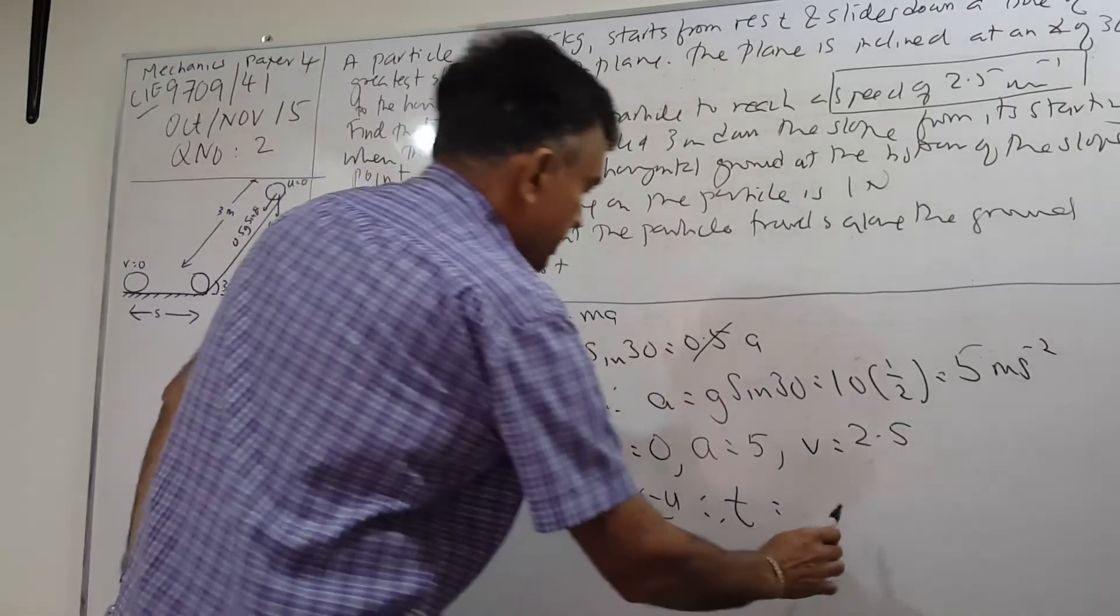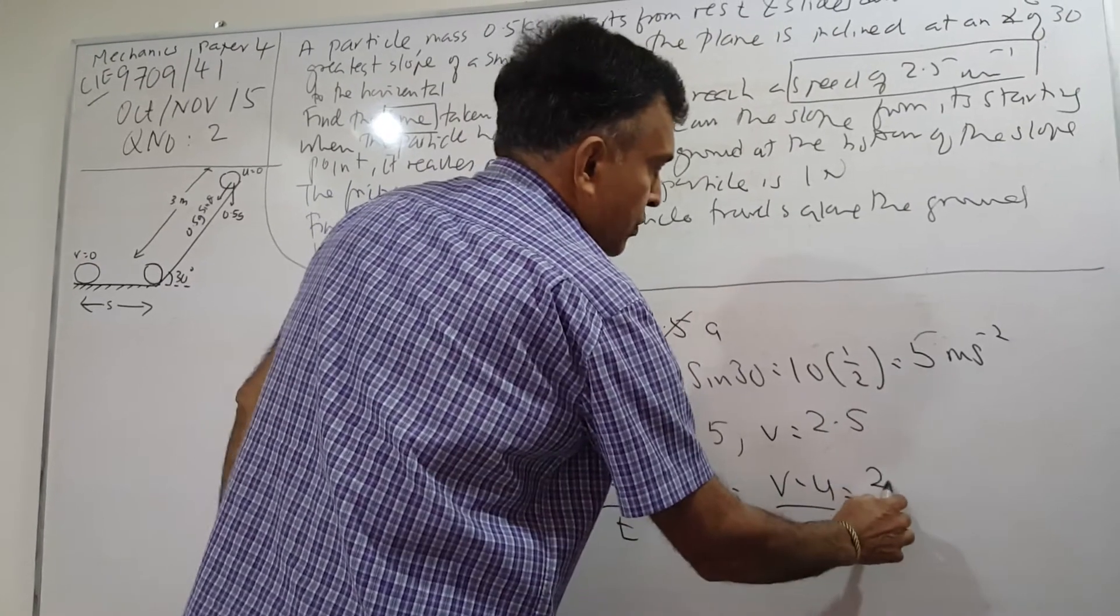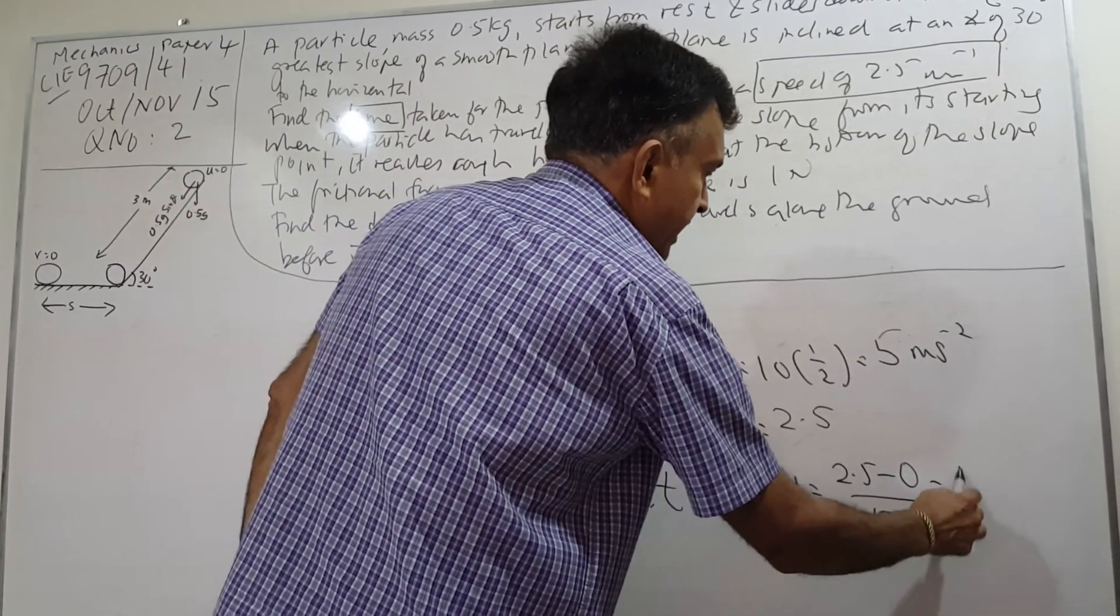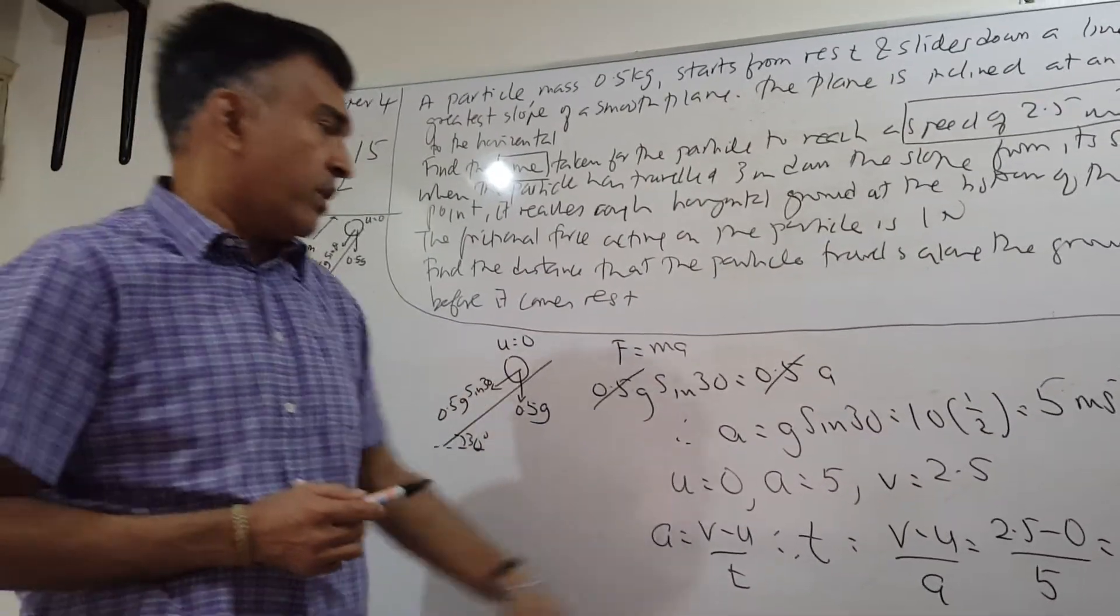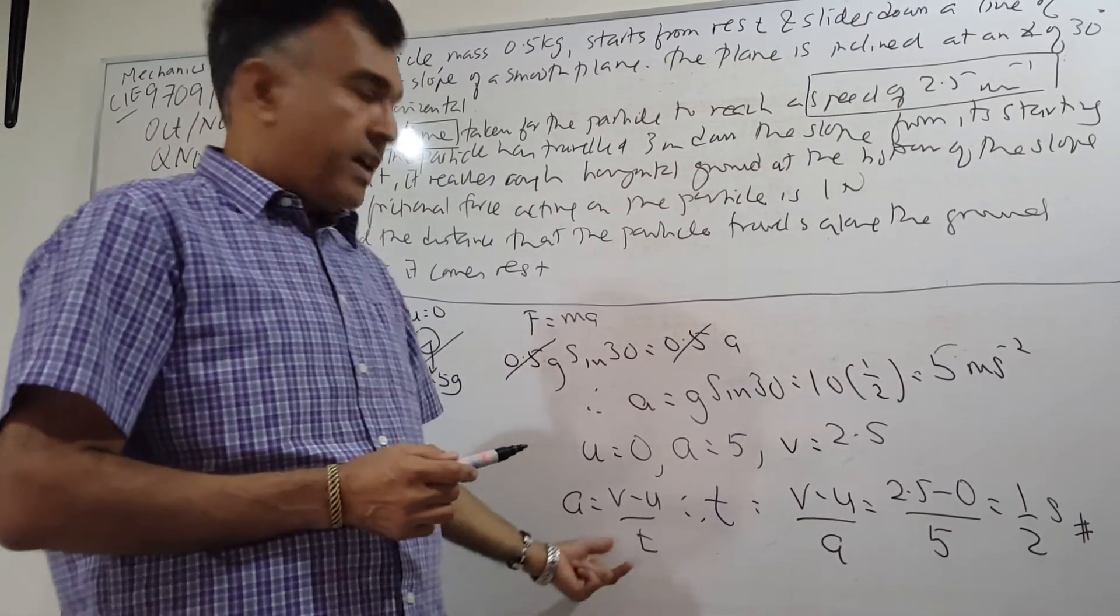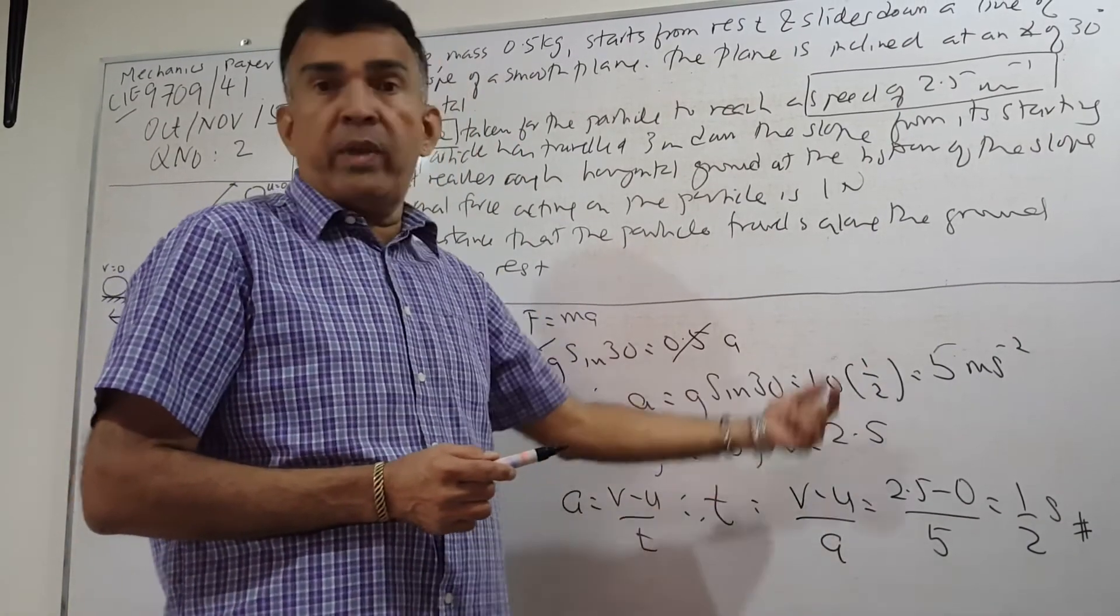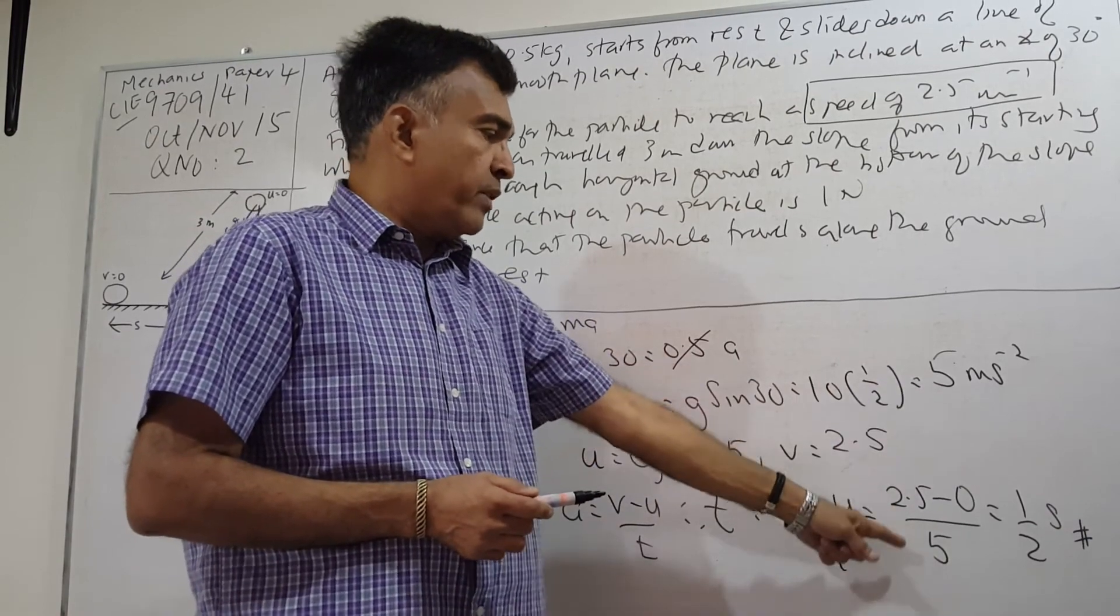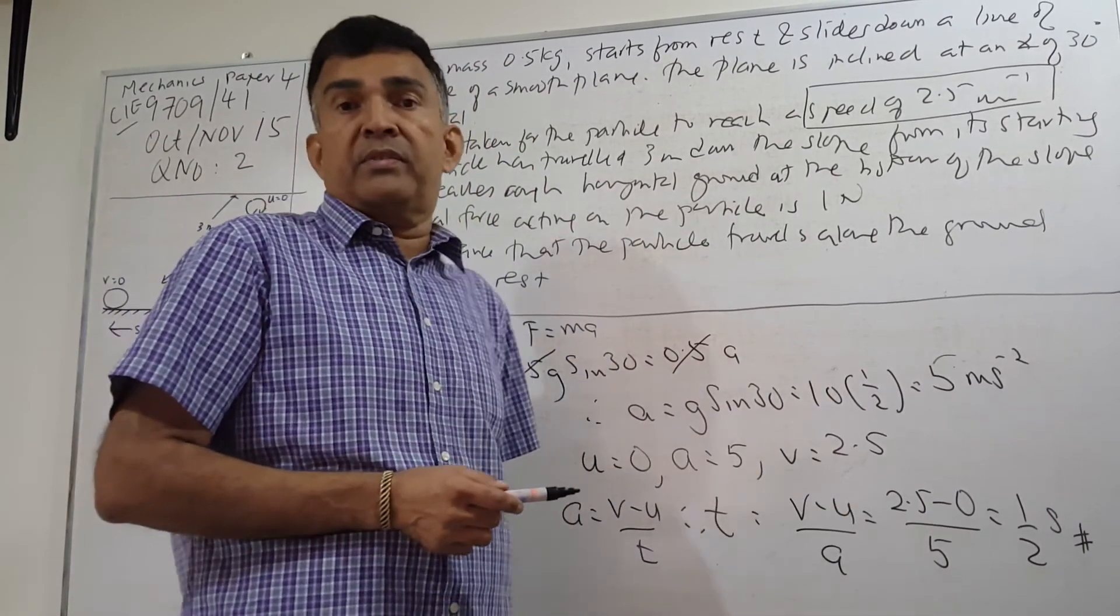So v minus u over a: 2.5 minus 0 over 5, and I have a half second or 0.5 seconds. Use the definition of acceleration and you can work out the value of time, just plug in the numbers. The only thing we had to find here is our acceleration. We have that, so it's 2.5 divided by 5. You can write your answer down as half second or 0.5 seconds and you're done.